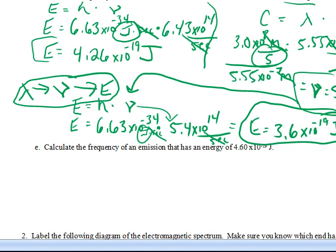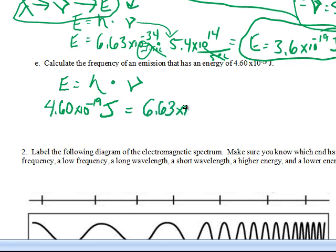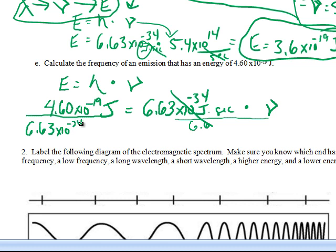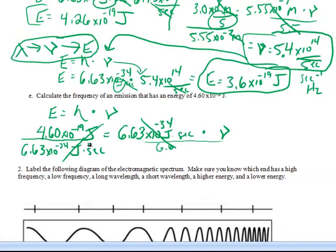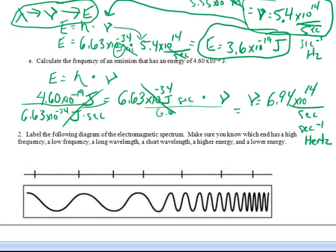Calculate the frequency of an emission that has an energy of... This is going to be a little easier because we have the energy. We know Planck's constant, and all we have to do is solve for frequency. Energy is 4.60×10⁻¹⁹ joules equals Planck's constant, 6.63×10⁻³⁴ joule·seconds, times frequency. Divide through by Planck's constant - joules cancel, and you end up with per second. Frequency is going to be 6.94×10¹⁴ per second, or second negative 1, or hertz - all fine. You should be able to use these formulas to solve one-step or two-step problems.